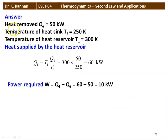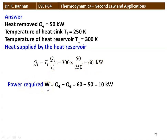The heat removed, Q2 = 50 kilowatt. Temperature of the heat sink, T2 = 250 Kelvin. Temperature of the heat reservoir, T1 = 300 Kelvin. Heat supplied by the reservoir, Q1 = T1 × Q2 / T2, which is 300 × 50 / 250 = 60 kilowatt. So the power required, W = Q1 − Q2 = 60 − 50 = 10 kilowatt. The power required to drive the reversed Carnot engine is 10 kilowatt.